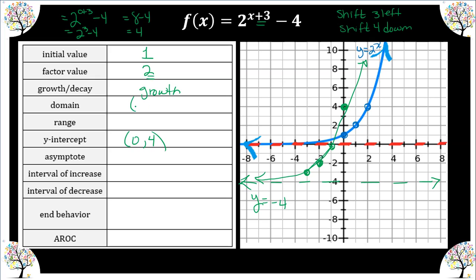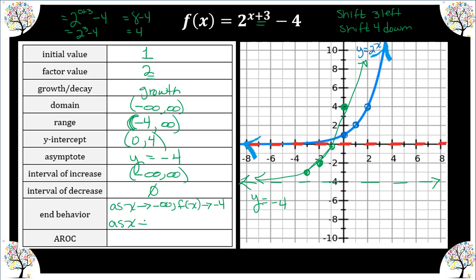The domain is all real numbers. My range depends on my asymptote — it can go down to negative four but it's not included, so we use parentheses, and then it goes to positive infinity. Our asymptote is the k value of negative four. This graph is always increasing — all real numbers for interval of increase, therefore it does not decrease. As x approaches negative infinity, f(x) goes toward negative four but does not touch the asymptote. As x increases, f(x) increases.